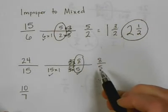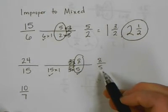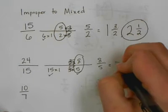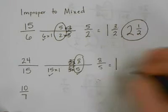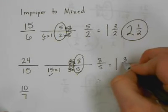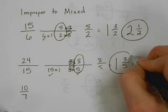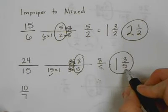Now 8 fifths is still improper, so we can't use 8 fifths. So we have to change it into a mixed number. So we say on my first try, big 1, 8 minus 5 is 3. Keep the last name fifths. And we can stop there because my fraction is no longer improper.